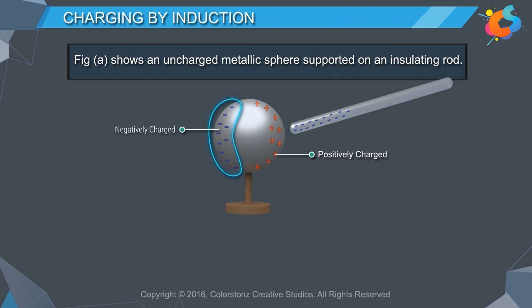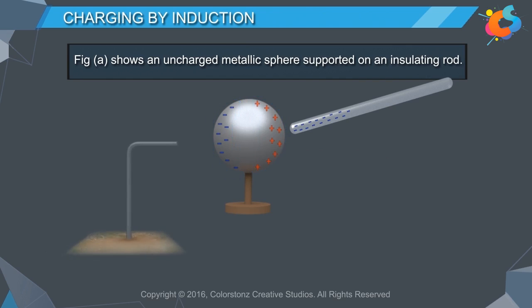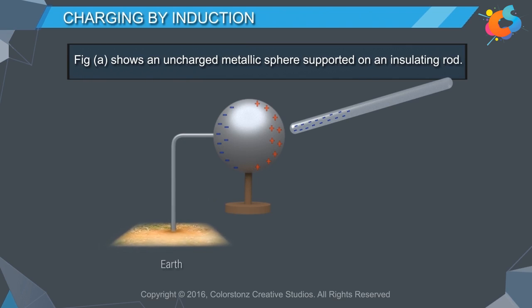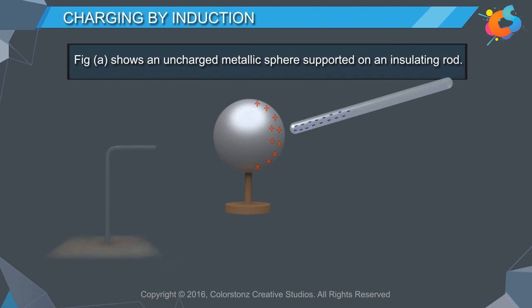When the negative side of the sphere is connected to a conducting wire which is earthed, the electrons flow to the ground and the positive charge remains there due to the attractive force of the external charge. When the external conductor is removed, the positive charge remains in the sphere, making it a positively charged object.